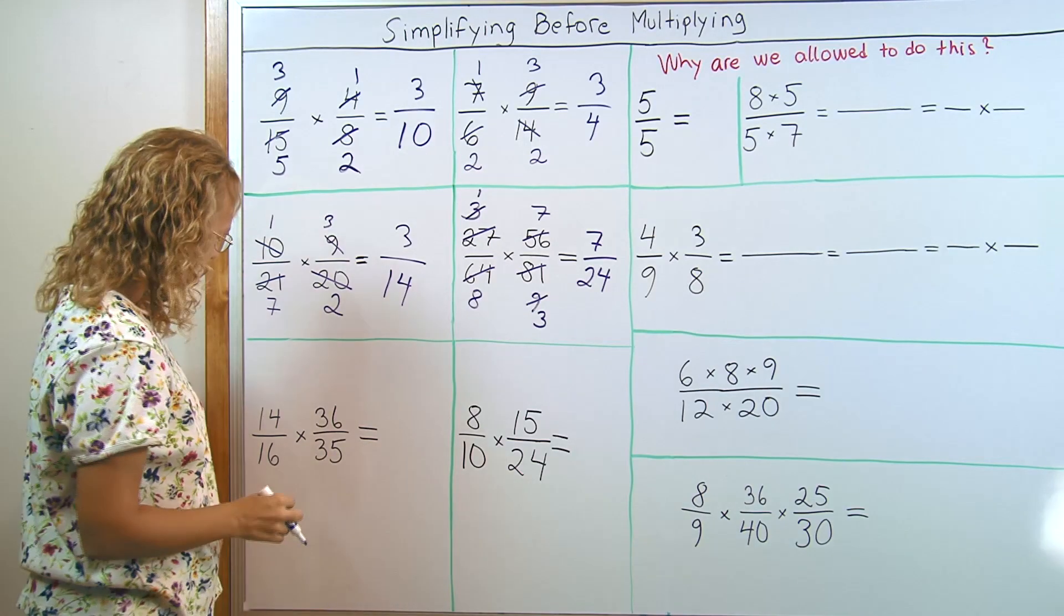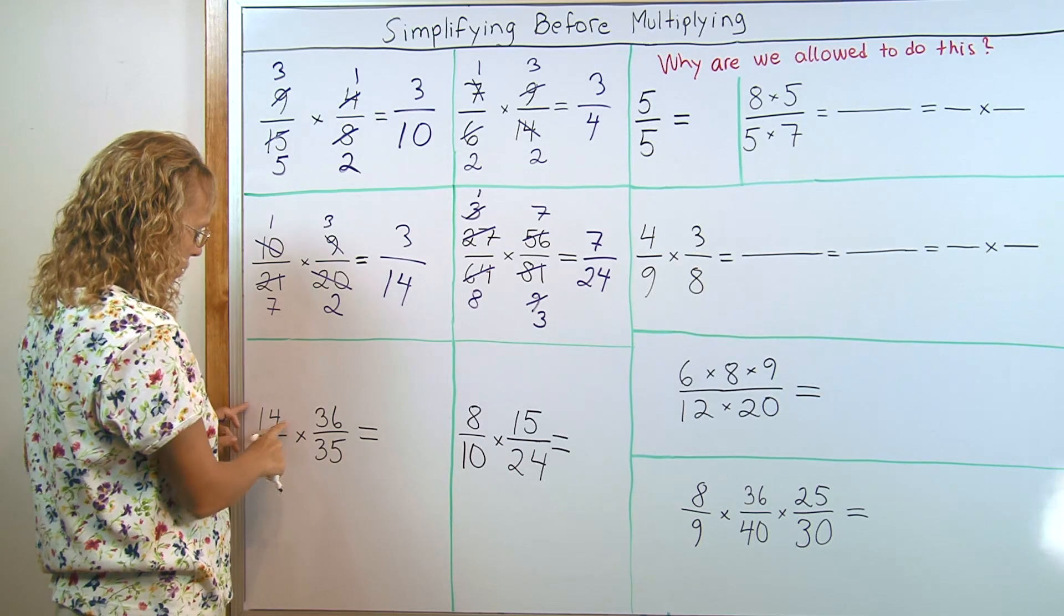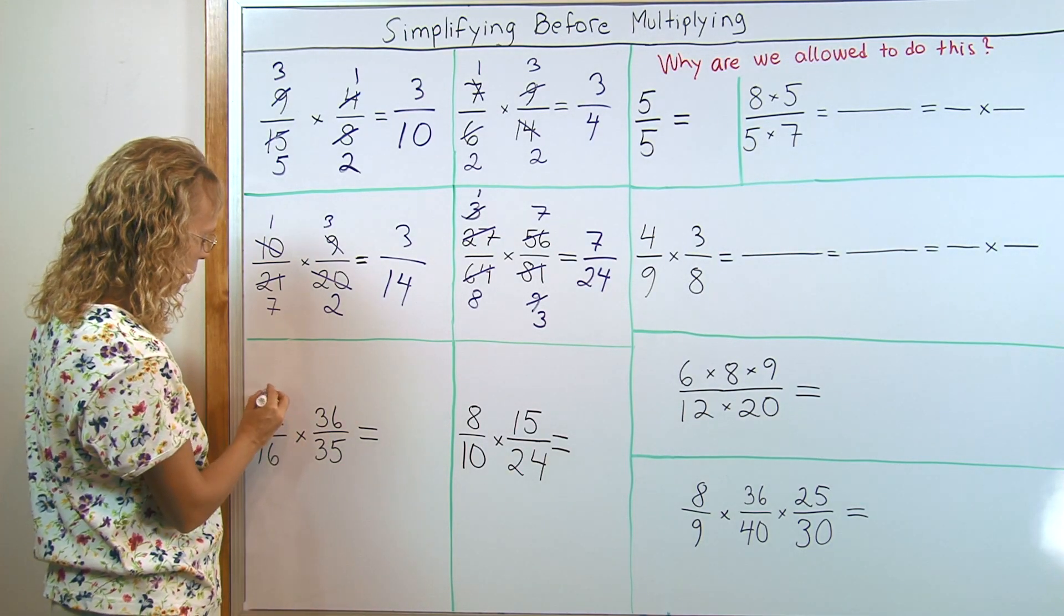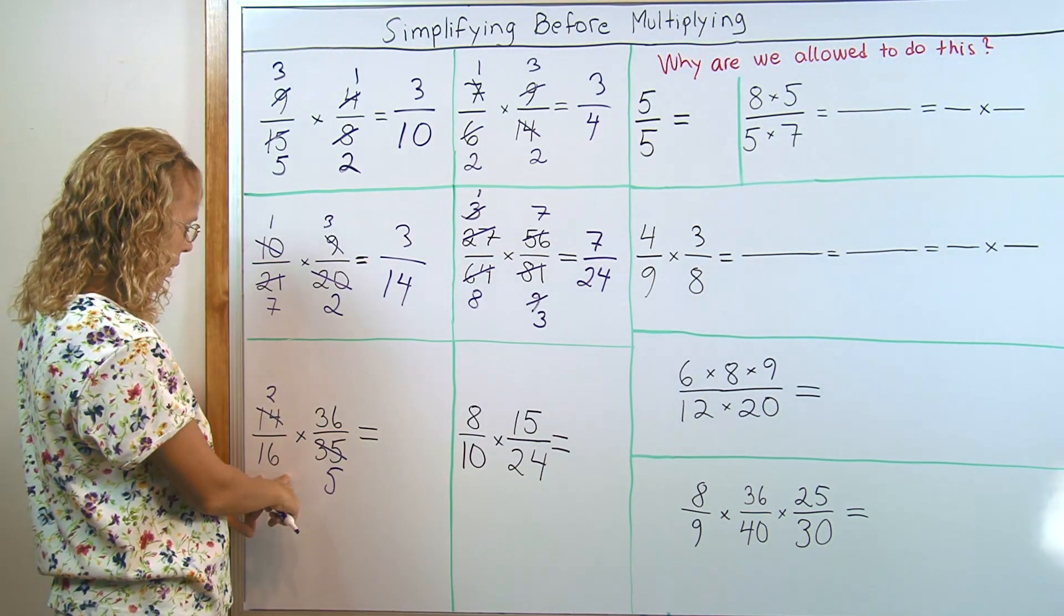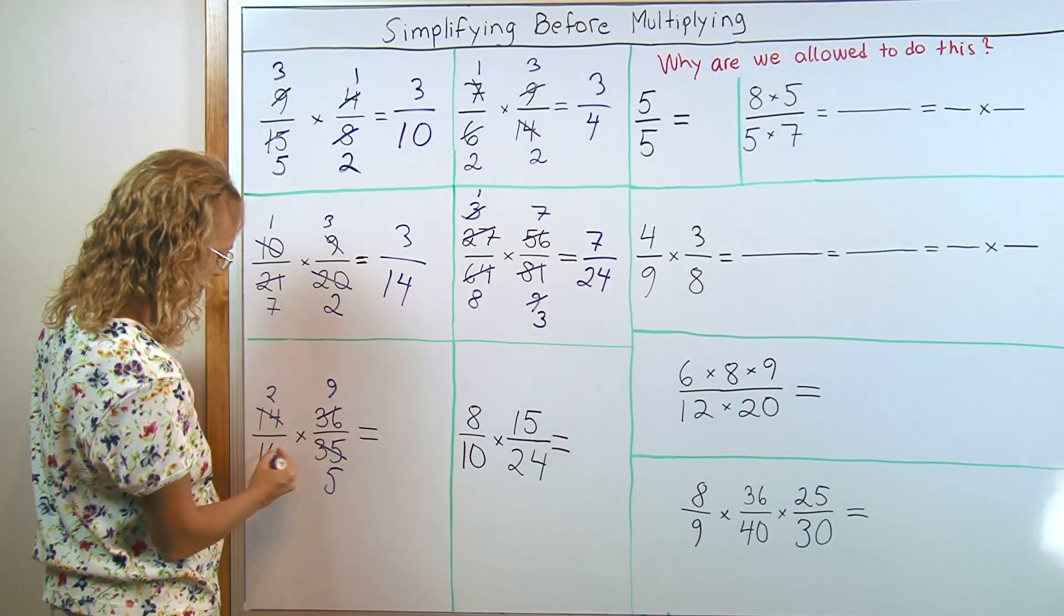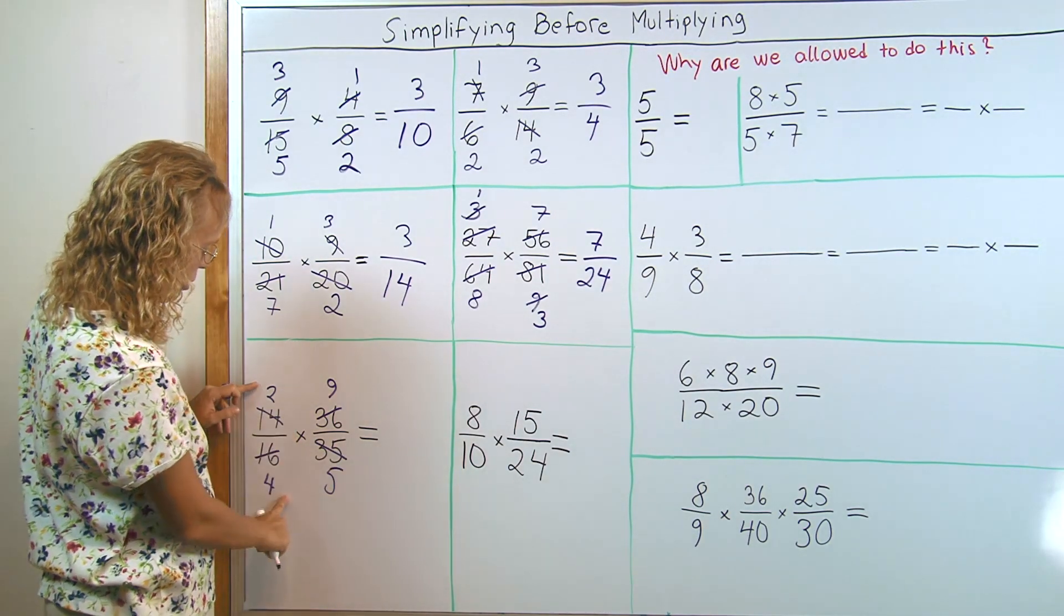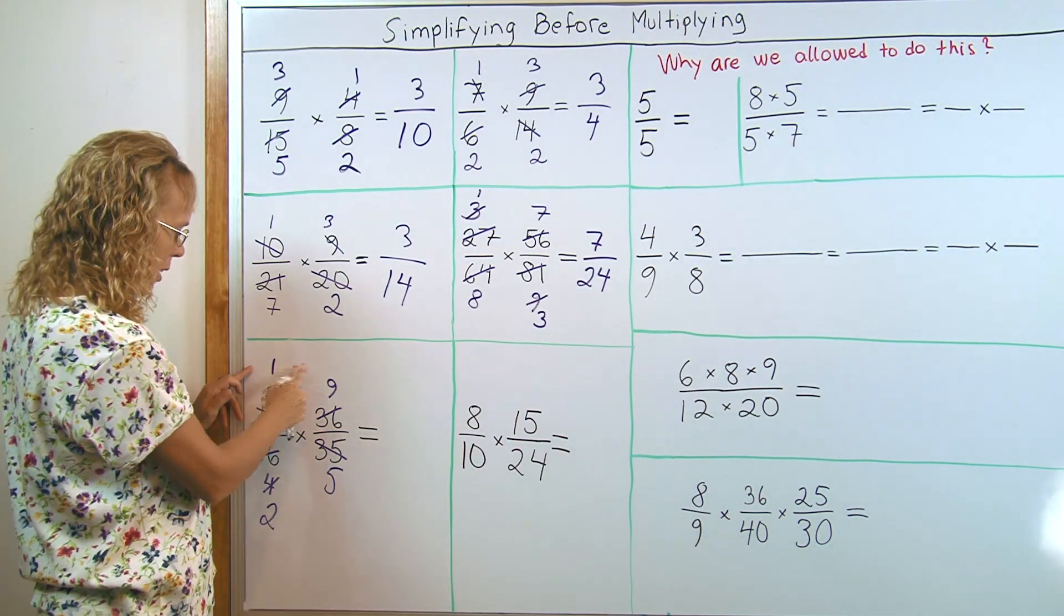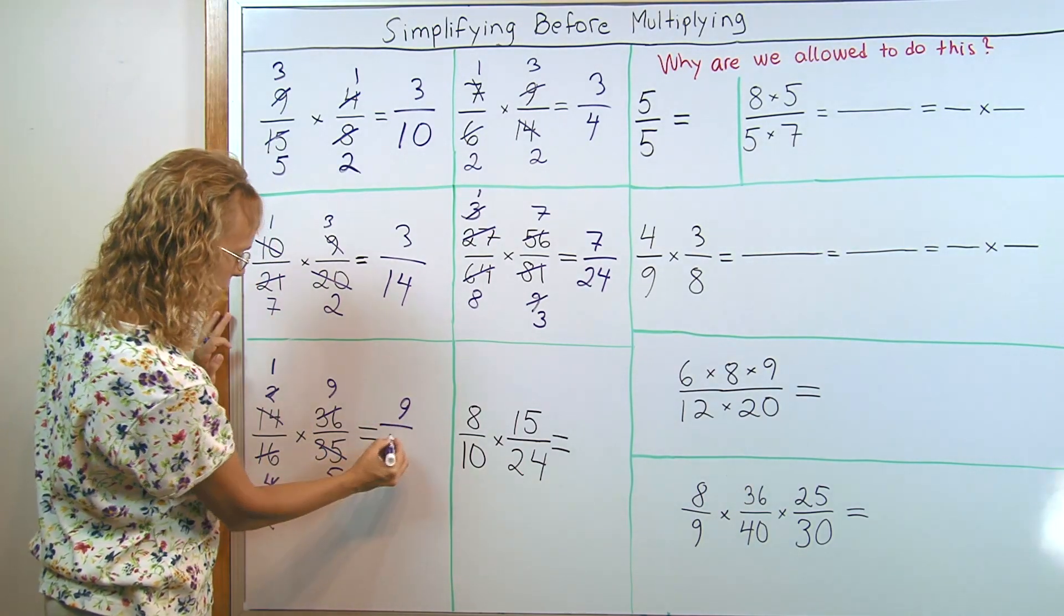Let's look at more examples. 14 over 16, 36 over 35. 14 and 35 are divisible by 7. So I divide by 7 like this. Then 16 and 36 are divisible by 4. So I get 9 here and 4 here. And yet I can still simplify one more time. 2 and 4, leaving me 1 here and 2 here. And now nothing more. 1 and 9, 2 and 5. So 1 times 9 and then 2 times 5.